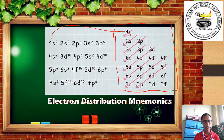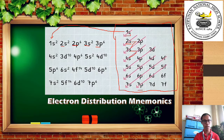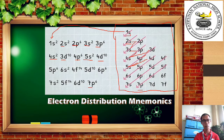Starting at 1s, the arrow goes to 2s, giving you 2s after 1s. From 2s to 2p, then 2p to 3s, from 3s to 3p, then 3p to 4s, from 4s to 3d, from 3d to 4p, then 4p to 5s, from 5s to 4d, and so on. As you just follow the arrows in the electron distribution mnemonics, you will end up at 7p, from 5f down to 7p.